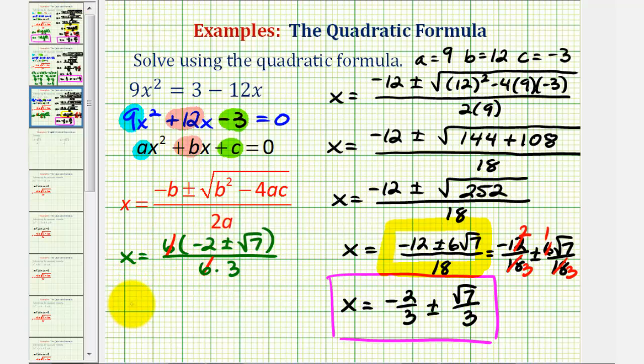So our solution can also be expressed as x equals negative 2 plus or minus square root 7 all over the denominator of 3.